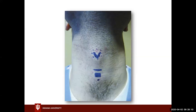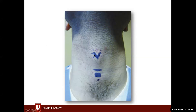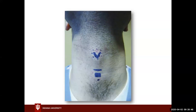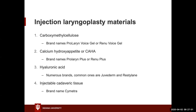This picture from a laryngology textbook shows the patient's neck with different injection spots marked. For a trans-thyrohyoid approach, you place the needle above the thyroid notch aiming down toward the vocal folds. For the cricothyroid membrane approach, the needle goes up and into the vocal fold through the cricothyroid membrane. Of course, not every patient has landmarks this easy to identify on their neck.